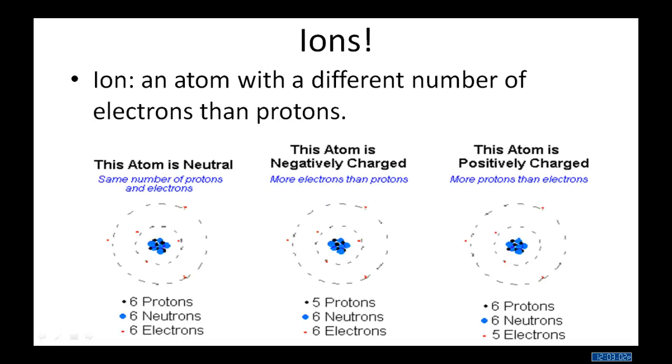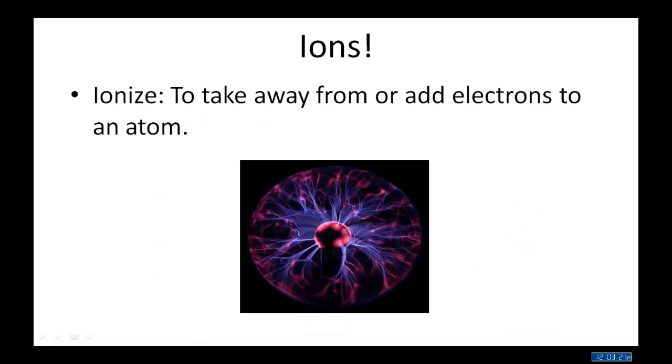Ions. An ion is an atom with a different number of electrons than protons. You start with a neutral atom, and then either add or subtract electrons. The resultant atom is called an ion. Ionize, to take away from or add electrons to an atom. The process of taking away electrons or adding electrons is called ionize. When all the electrons have been stripped from an atom, the atom has been fully ionized. This happens quite frequently with hydrogen atoms.